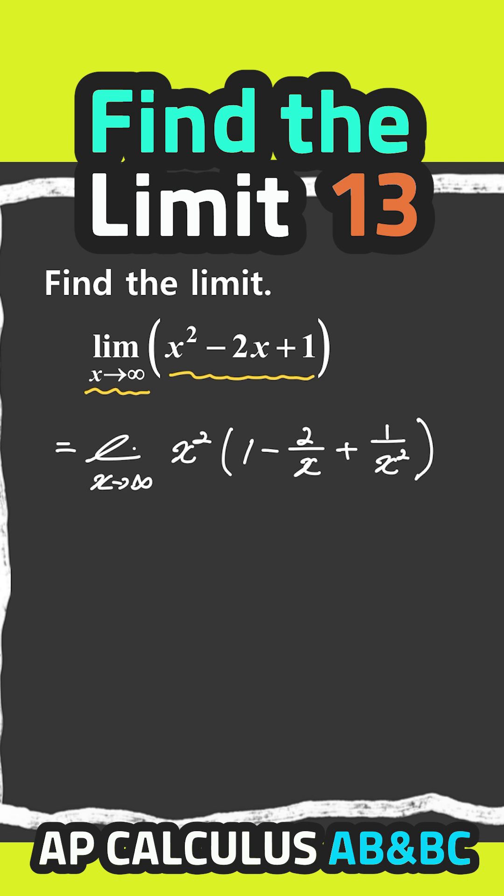So as x approaches infinity, 2 over x approaches 0, right? Because 2 over infinity equals 0. 1 over x squared, that approaches 0, right?